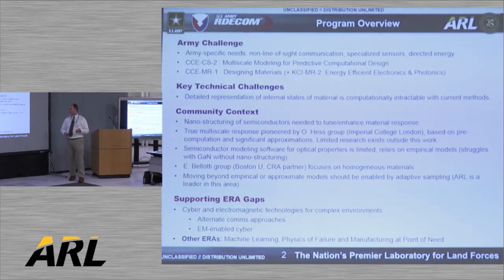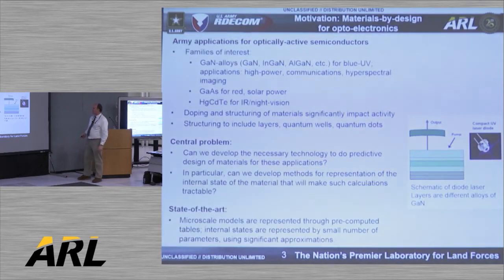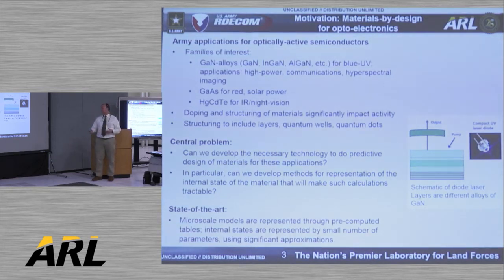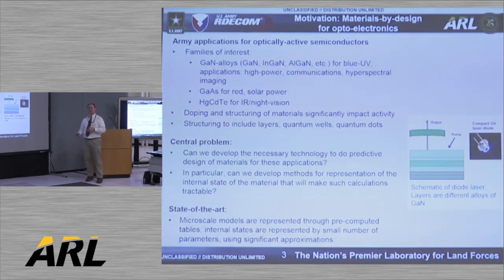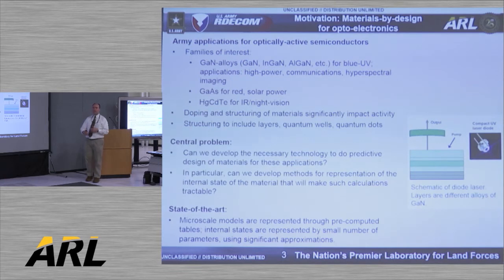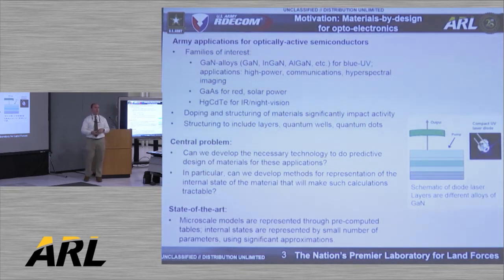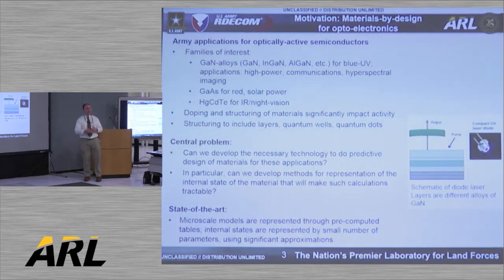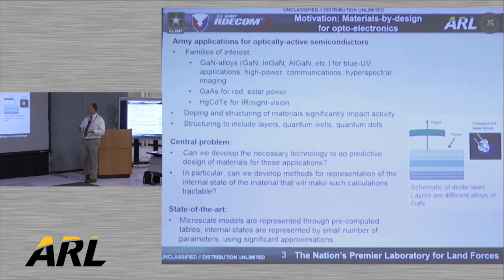This supports the cyber and electromagnetic technologies CRA. We want to be able to say: this type of material, this type of doping, this type of layering will give us this type of response. In semiconductor devices, you have many different layers of different alloys of gallium nitride — you add aluminum, you add indium — and depending on how you structure and dope the material, you get different responses. Right now the best we can do is some measurements and calculations, but we're not able to do true prediction of material properties — and that's where we'd like to head.